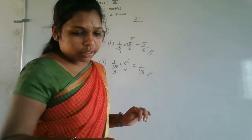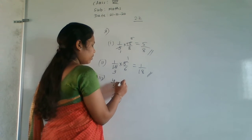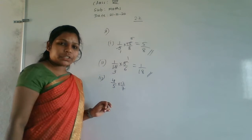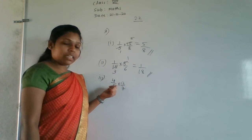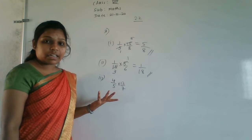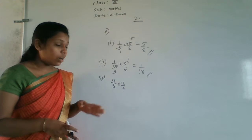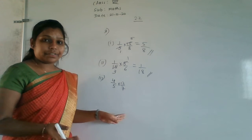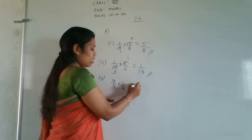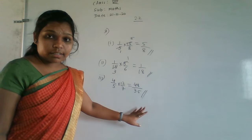Third question: 4/5 × 12/7. Check for cancellations: 4 and 7 are not in the same table; 12 and 5 are not in the same table; 4 and 5, 12 and 7 — no common factors. No cancellation holds. So multiply directly: 4×12=48 in numerator, 5×7=35 in denominator. Answer is 48/35.